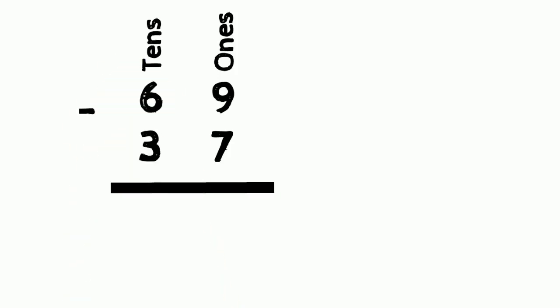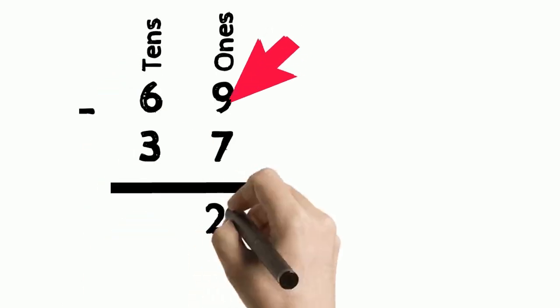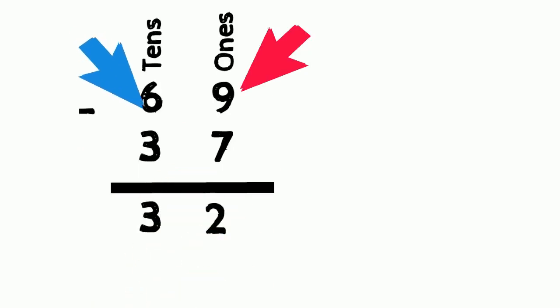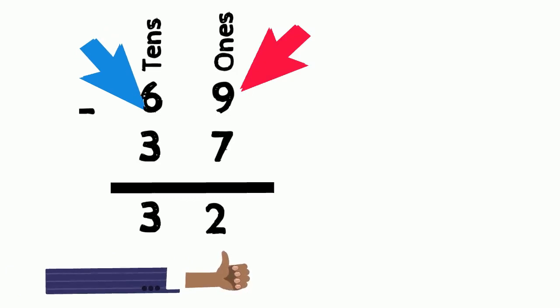As always, we start with the number on the right which is the ones place, and then make our way to the left to the tens. Starting from the ones place: 9 take away 7 equals 2. Then moving to the tens place: 6 take away 3 equals 3, and the answer is 32.